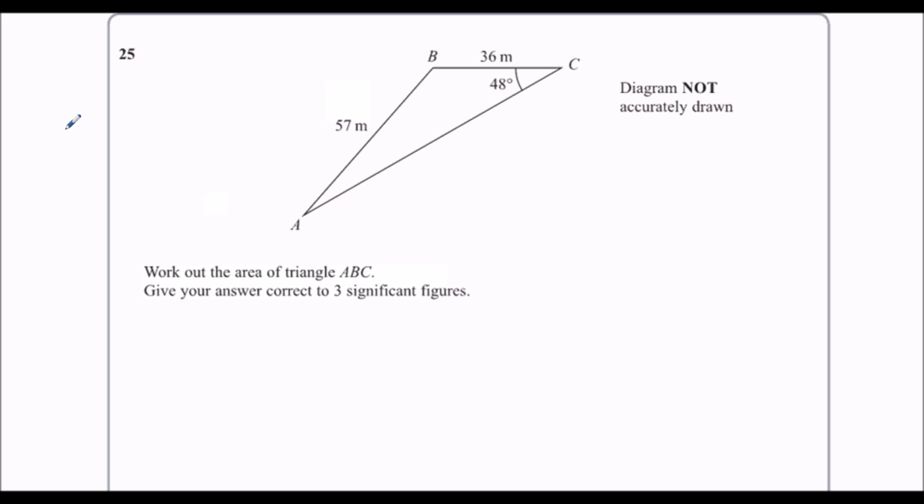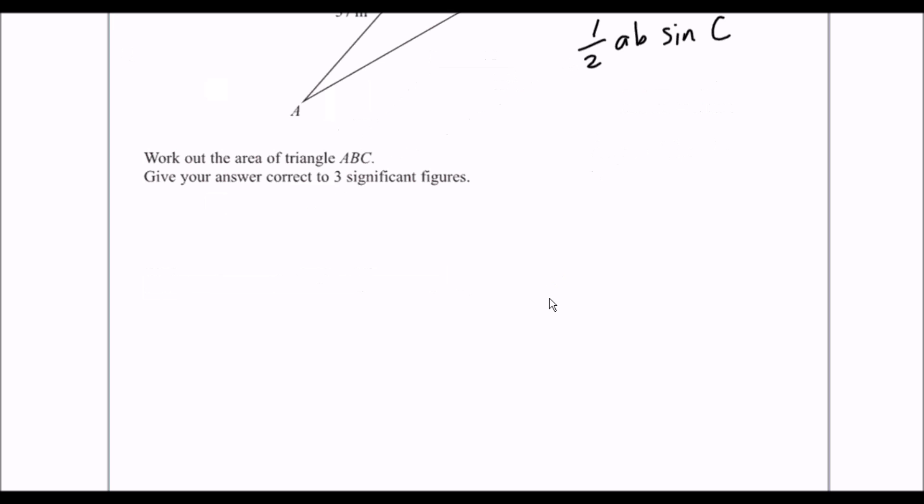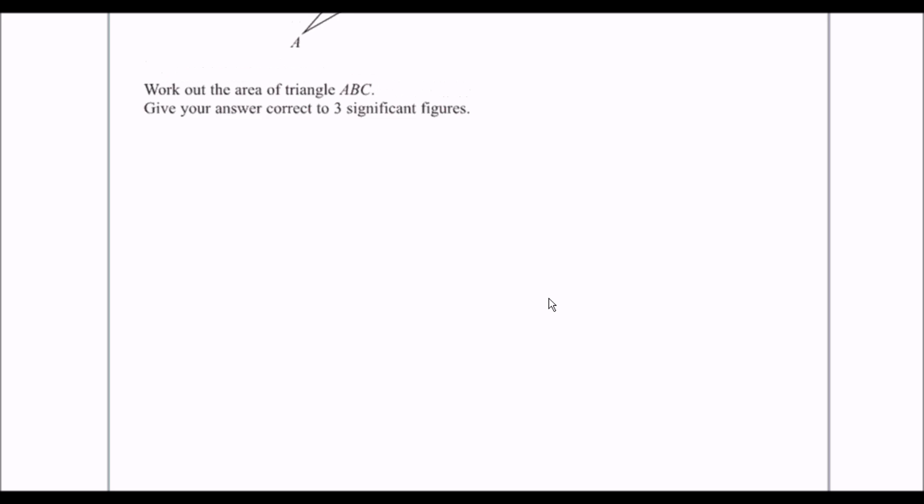Okay, so here we've got a non-right angle triangle and we need to work out the area. The area of a non-right angle triangle is half a, b, sin c. This is on the formula page, but we unfortunately don't have the right information for this at the moment. Let's just check how many marks it is. It's four marks.